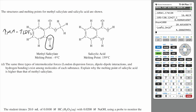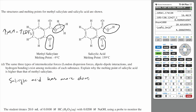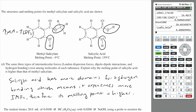Methyl salicylate has only one domain for hydrogen bonding: the OH group. The OC bond cannot form hydrogen bonds because it's bonded to carbon, not hydrogen. Salicylic acid, however, has two domains for hydrogen bonding. Since salicylic acid has more hydrogen bonding domains, it experiences stronger intermolecular forces, which explains its higher melting point. One additional hydrogen bonding domain can make a significant difference, as hydrogen bonding is a very strong intermolecular force.